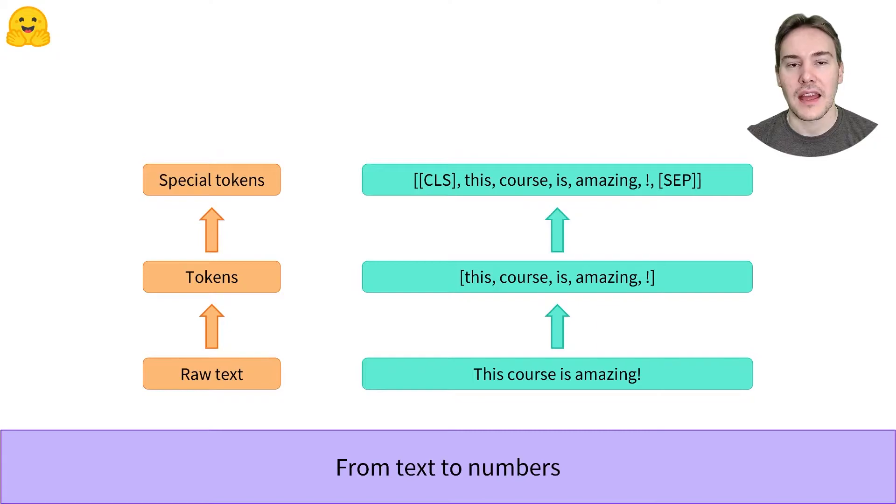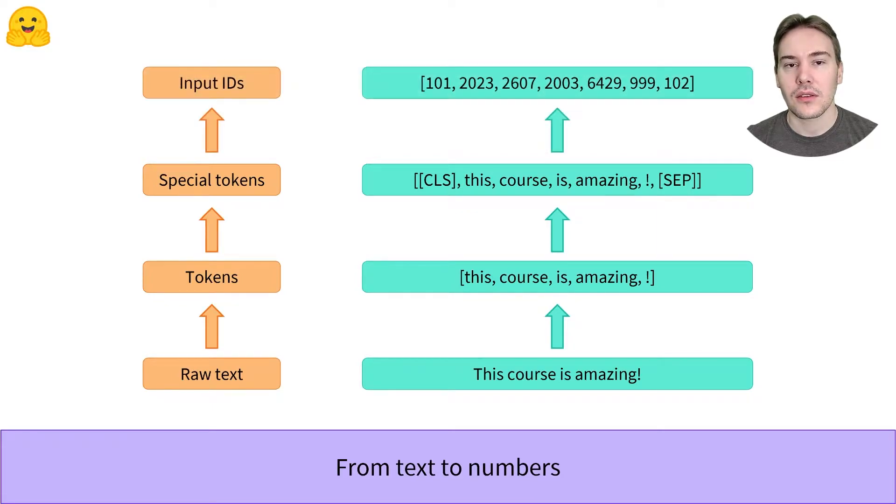The tokenization process has several steps. First, the text is split into small chunks called tokens. They can be words, part of words, or punctuation symbols. Then, the tokenizer will add some special tokens if the model expects them. Here, the model used expects a CLS token at the beginning and a SEP token at the end of the sentence to classify. Lastly, the tokenizer matches each token to its unique ID in the vocabulary of the pretrained model.